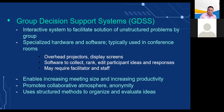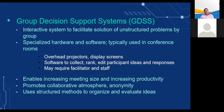Group decision support systems, or GDSS, are another type of system that supports decision making. Increasingly, GDSS takes the form of virtual meeting or telepresence capability rather than physical group decision rooms. A GDSS is an interactive computer-based system for facilitating the solution of unstructured problems by a set of decision makers working together as a group in the same location or in different locations. Collaboration systems and web tools for video conferencing and electronic meetings support some group decision processes, but GDSS provides tools and technologies geared explicitly toward group decision making. GDSS-guided meetings take place in conference rooms with special hardware and software tools.